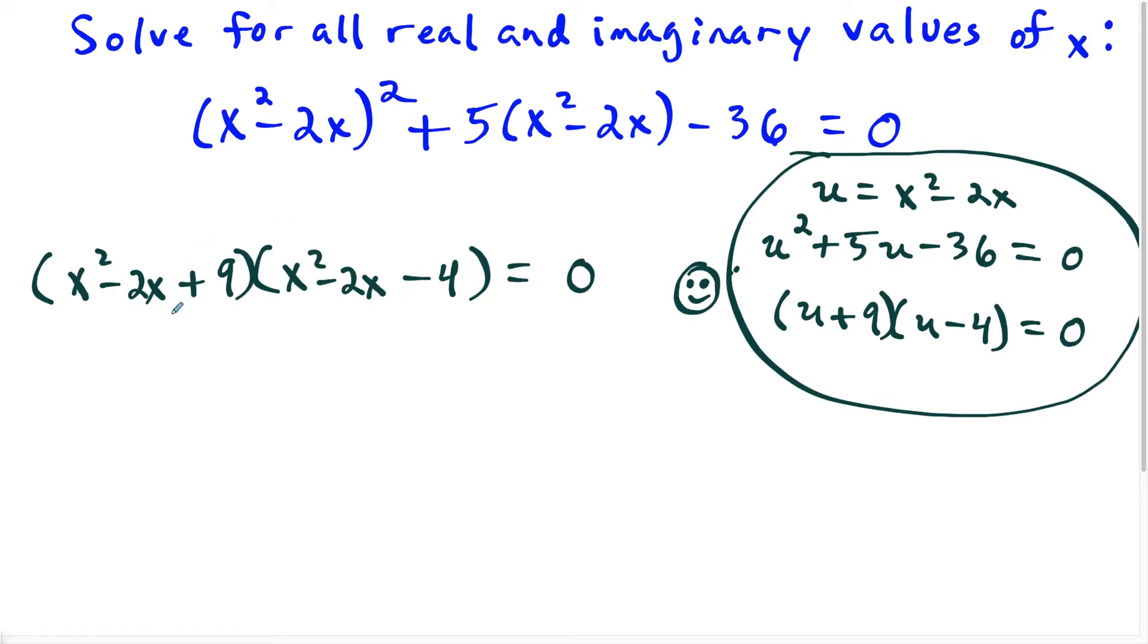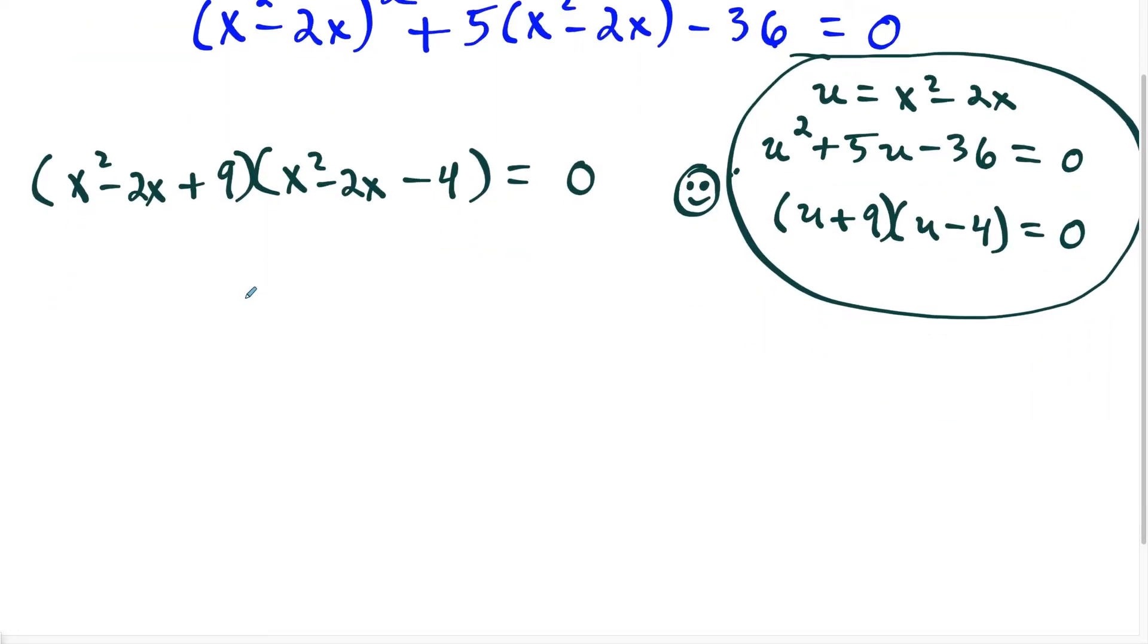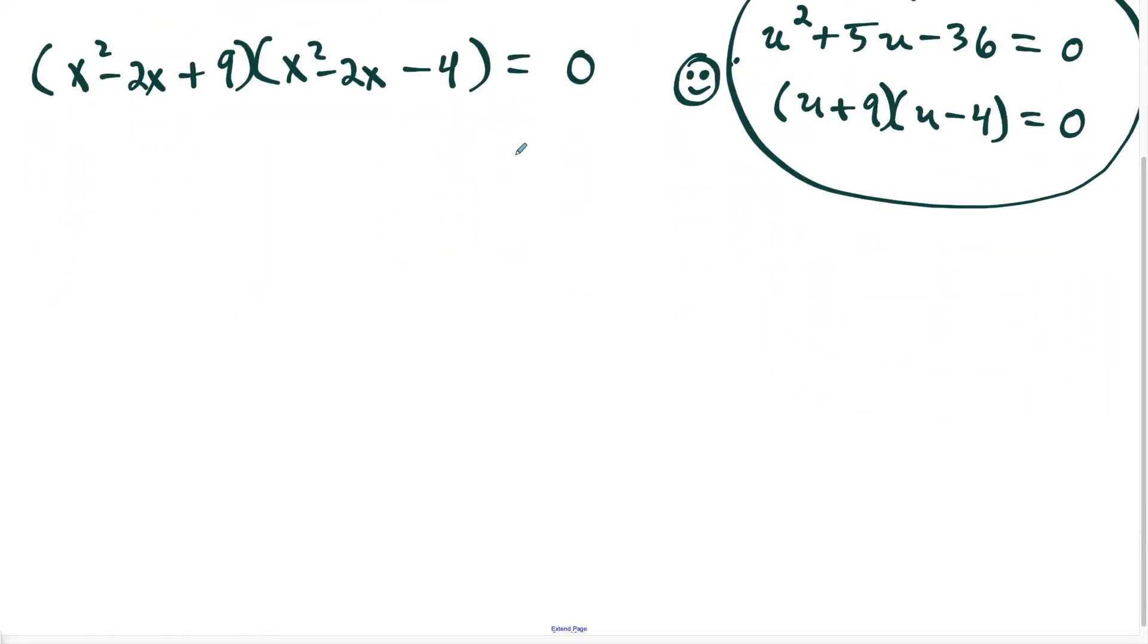So really, what we have to do here is we have to find the roots of both of these quadratic equations. And then we'll have the solution to this problem. So let's start with the first one here. So if we set x squared minus 2x plus 9 equal to zero, what we're going to have here is we're going to use the quadratic formula.